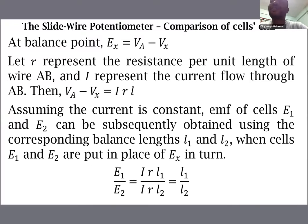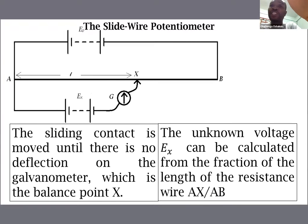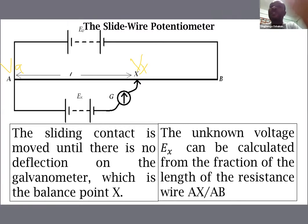At point X where we measure E-x, the potential difference is VA minus VX — the potential at A minus the potential at X. At that balance point, the EMF of battery E-x is equal to the potential difference VA minus VX.